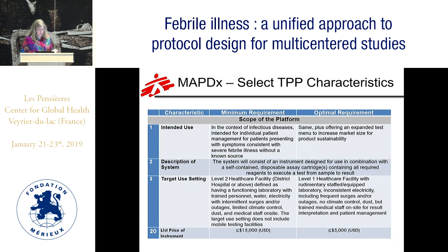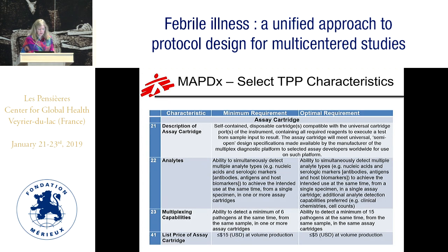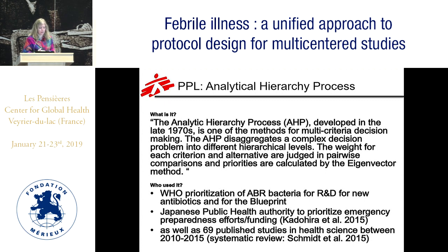The TPP is published and you can look it up. Just to highlight: it would be a combination immunoassay and molecular platform, and it would be able to minimally operate at level two — district level — or optimally at level one. The assay cartridge would be integrated and self-contained, and we would like it to minimally detect six pathogens at the same time from the same sample, or optimally 15 for more comprehensive diagnostic support.